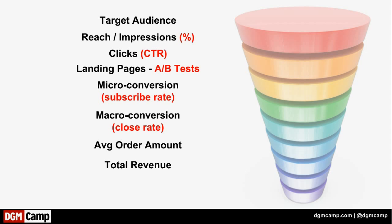And then we can say, how much did we spend to get to that initial target audience, and how much return did we get on our investment? That'll be our ROI. So we're going to do an ROI for each individual campaign. That's really where we're going to be focused at DGM Camp — building the marketing technology stack, running individual campaigns through that stack, and measuring the ROI on every campaign. That's how we get to our goal, which we'll get to at the end of this video.